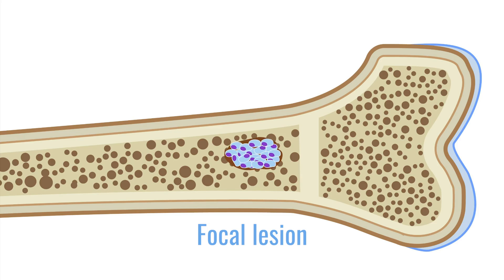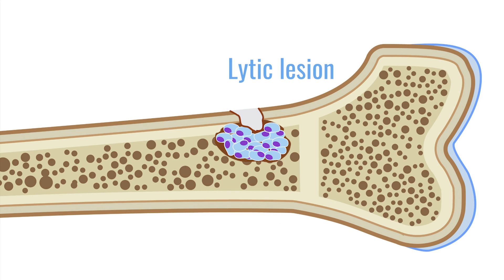If we look at focal lesions sequentially, eventually a focal lesion leads to a hole in the bone — to the osteolytic lesion — but it hasn't done so yet when it's only a focal lesion without osteolysis.